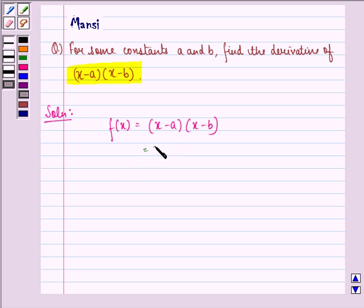We get x into x is x², x into -b is -bx, -a into x is -ax, and -a into -b is +ab.